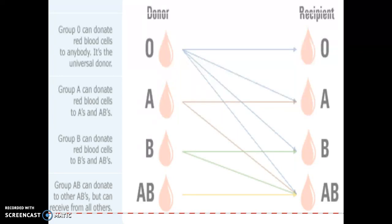Type A only has the A antigen, so they can give to type A or type AB. Type B blood can only give to B or type AB, because they both recognize it as good. Type AB blood is the universal recipient — they can receive from anybody because they recognize both the A and B antigens as normal and don't have antibodies against those. However, type AB can only donate to AB.